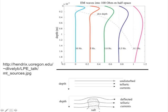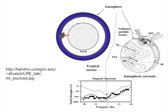The ionosphere changes as different parts are illuminated during the day, causing currents in the ionosphere. Those currents, along with impacts from the sun and thunderstorms, produce telluric currents. Here's a thundercloud and lightning — that radio frequency bounces around between the ionosphere and the surface of the Earth, producing more currents. At high frequencies we see peaks in the magnetic spectrum from thunderstorms, and at low frequencies from diurnal variations in the ionosphere.